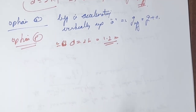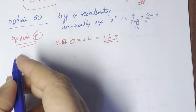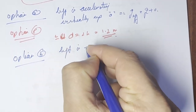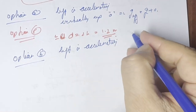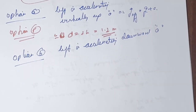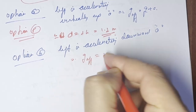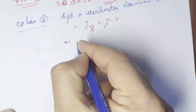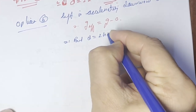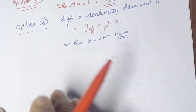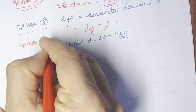Option B: lift is accelerating vertically downward with acceleration less than gravitational acceleration. Again, d equals 2h, which is independent of g_effective, so d is also 1.2 meters. Therefore, option B also matches option P.